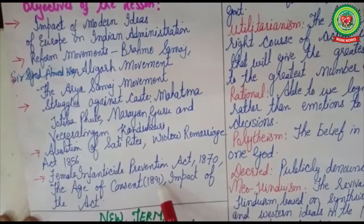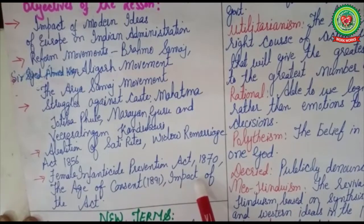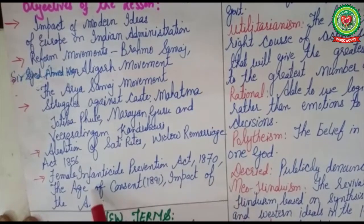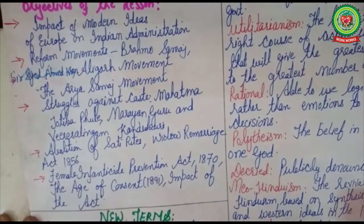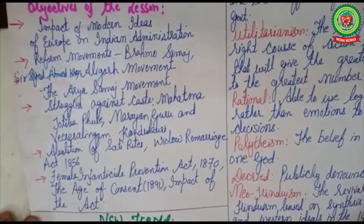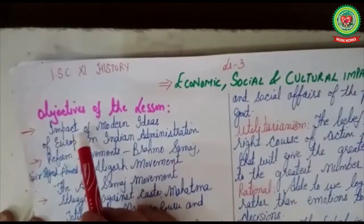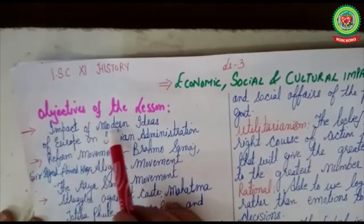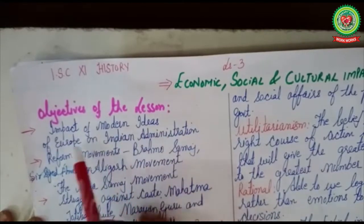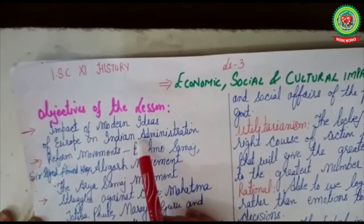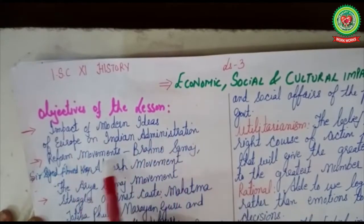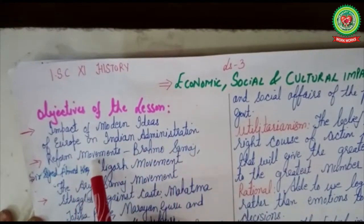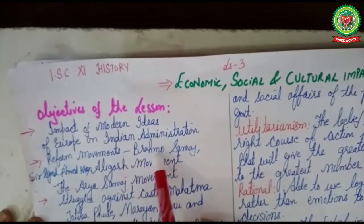We will also cover widow remarriage with the Remarriage Act of 1856, Female Infanticide Prevention Act 1870, the Age of Consent 1891, and its impact. In today's session we will discuss the impact of modern ideas of Europe on Indian administration and the reform movement called Brahmo Samaj.